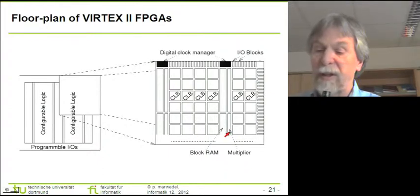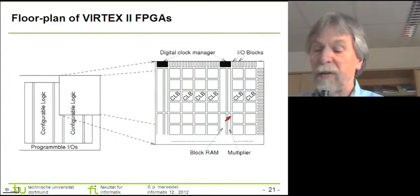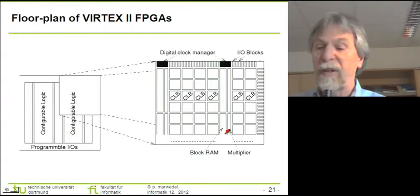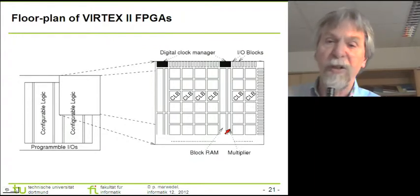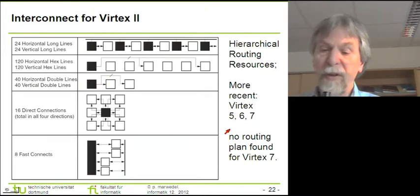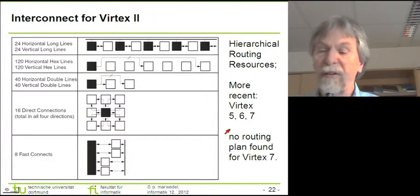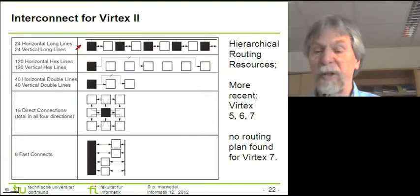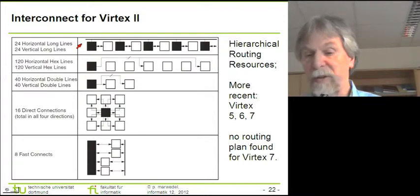It turns out that CLBs would not be very efficient if we tried to implement multipliers either. So therefore there are special areas that contain multipliers. We will see a little later that there are more specialized blocks available with some of these FPGAs. These different CLBs can be connected to each other through programmable links, and different FPGAs contain different techniques for linking these CLBs together.